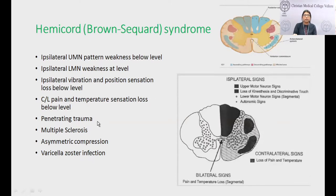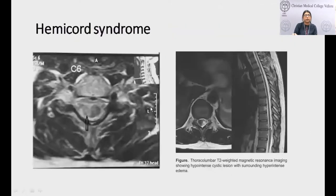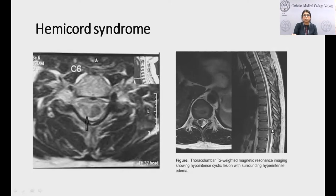This T2 axial spinal cord MRI shows one half of the spinal cord affected at C6. The T2 sagittal MRI shows a hypointense lesion surrounded by a hyperintense rim representing a cystic lesion. The corresponding axial section confirms half the cord is affected. This kind of lesion may present as a hemicord or Brown-Séquard syndrome.